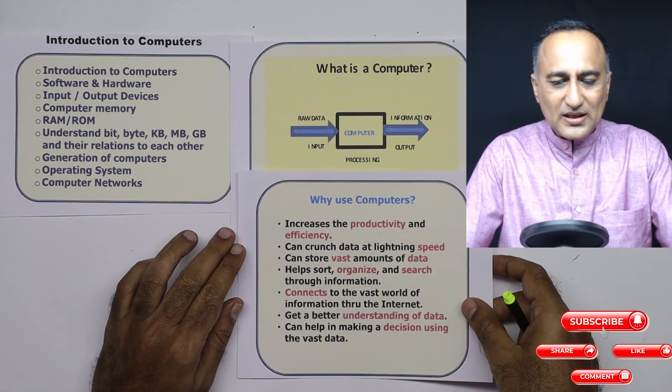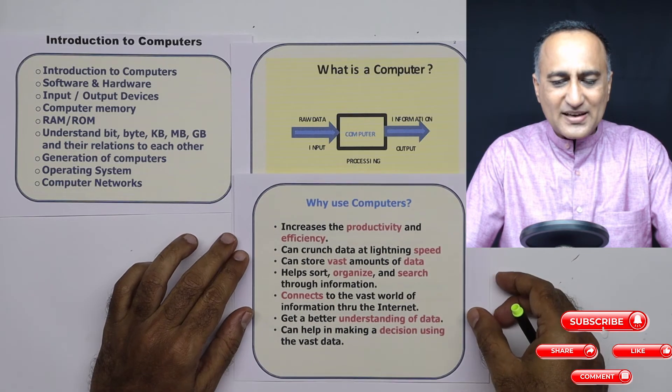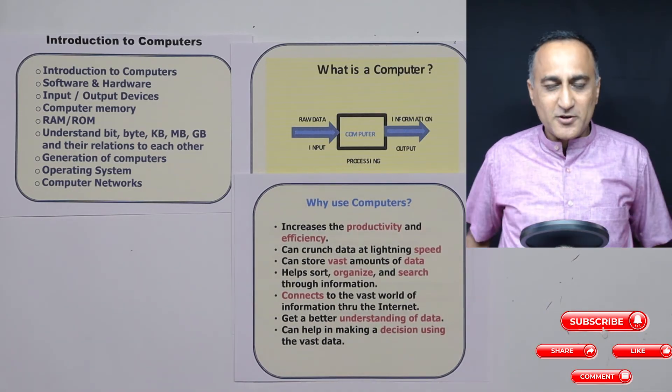So computers are machines which perform operations or calculations based on instructions given by human beings. Now let's try to make a case: why should we use computers? Because that should be your first question.